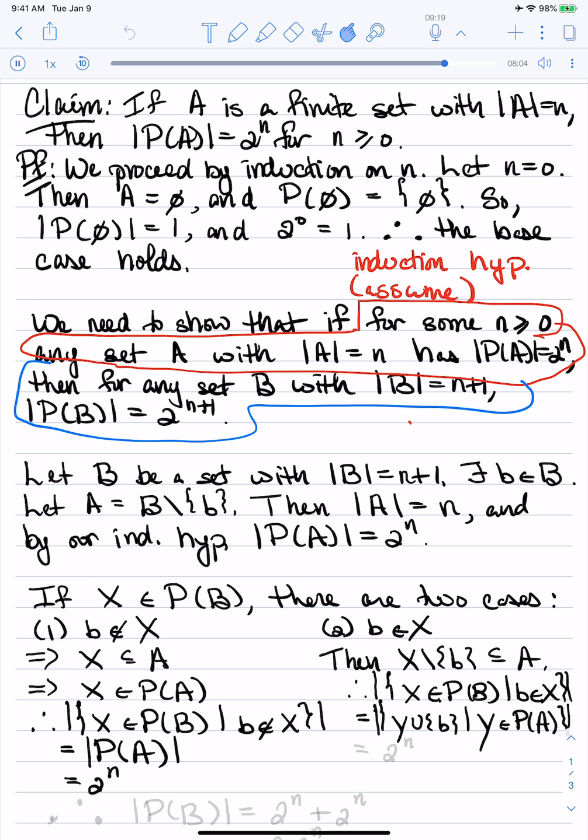Since these two sets are equal, their cardinalities are equal, but I see the cardinality of the second set, there's one element of it for every element in the power set of A. So it has cardinality 2 to the n.